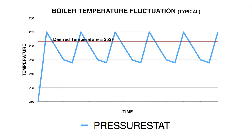Here's a graph over time representing internal boiler temperatures controlled by a pressure stat. The temperature rises quickly, usually overshoots the set temperature or pressure, and then cools until the pressure stat kicks on the heating element again and the cycle repeats. As you can see, the temperature swings quite a bit and the boiler is rarely at the set temperature. In fact, temperature swings of 10 degrees Fahrenheit or more are common in pressure stat controlled boilers.